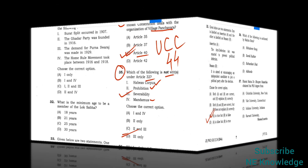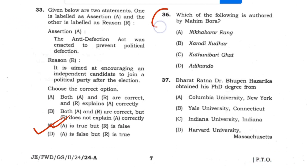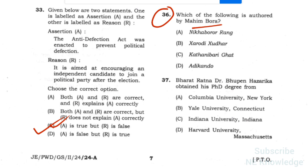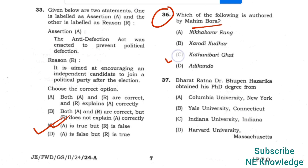Question 36: Which of the following is authored by Mohimbara? Answer: option C — Kathani Bari Khat.